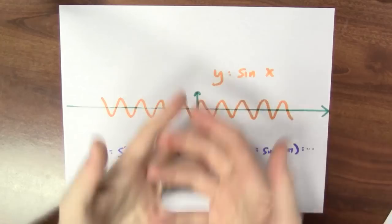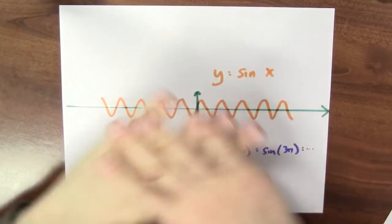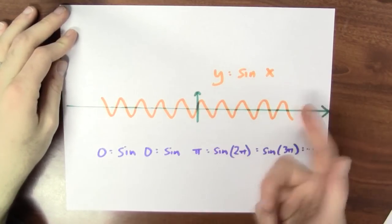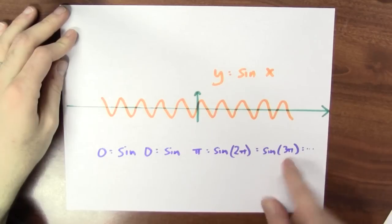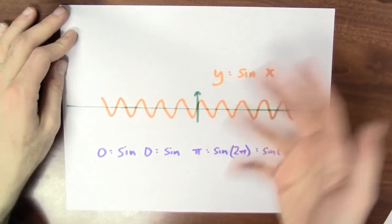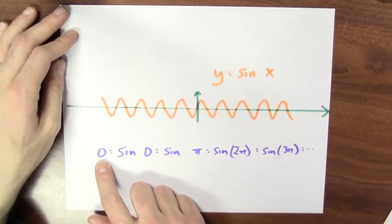People often talk about inverse trig functions, but that's nonsense. The trig functions aren't invertible. Look at y equals sine x. Sine sends different input values like 0, π, 2π, 3π, to the same output value of 0. So how are you going to pick the inverse for 0?